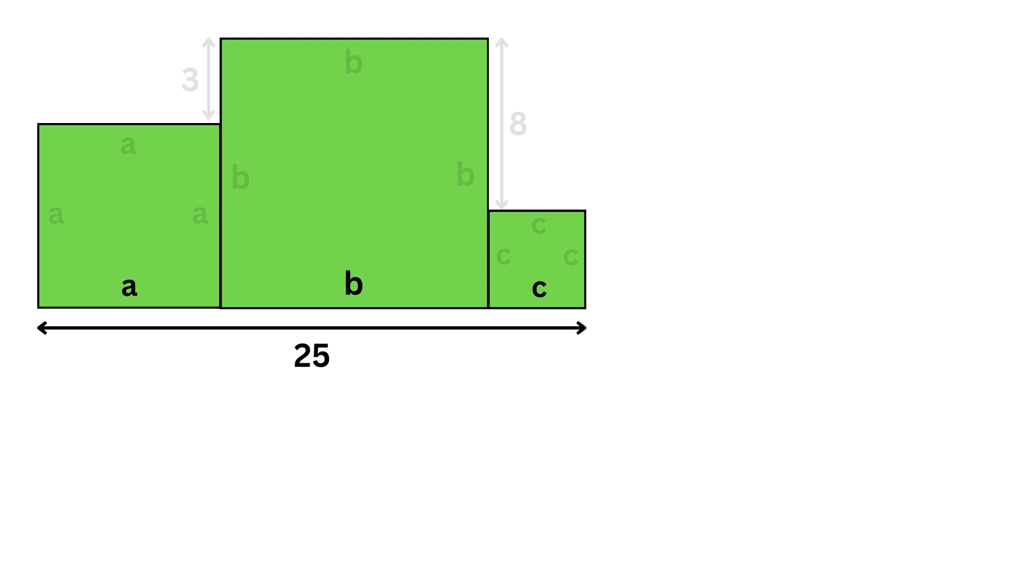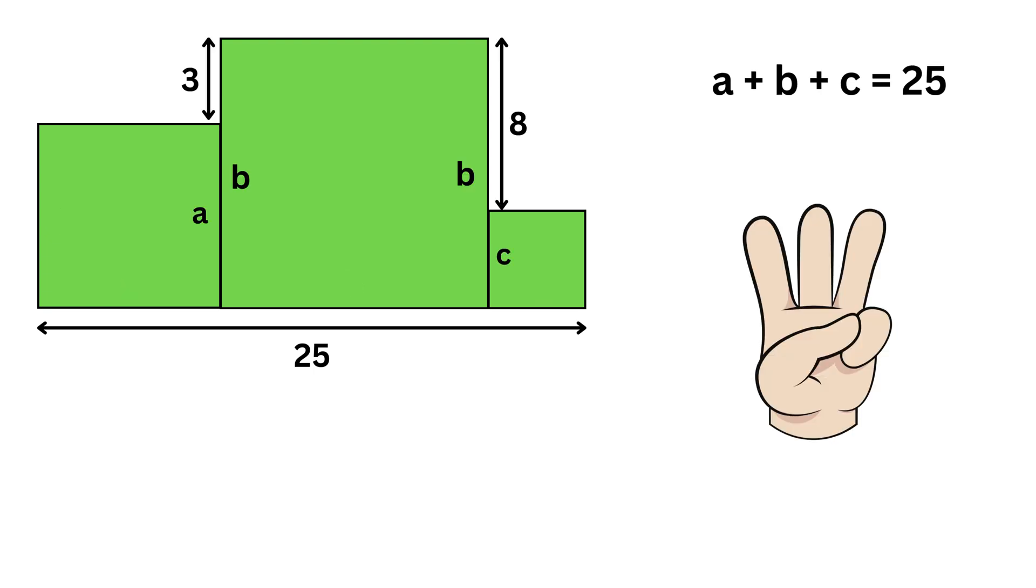Now, if we carefully look at the base, the three squares are placed in a row, so their side lengths add up to the total horizontal distance. That means A plus B plus C is equal to 25. You see we have three variables A, B, and C, and therefore we need three equations to solve for them. We have already found one, which is this.